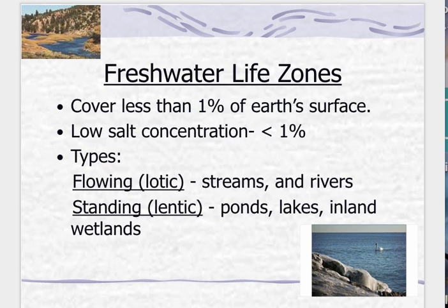The first thing on the screen is the definition of what freshwater life zones look like. They cover less than 1% of the Earth's surface, compared to the saltwater oceans. We have low concentration of salt, less than 1%. You have two different types: flowing, which is called lotic — that's a term you should know — such as streams and rivers. And you have standing, which is lentic, such as ponds, lakes, and inland wetlands.